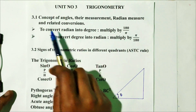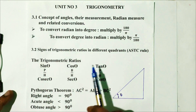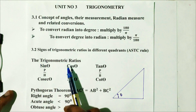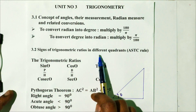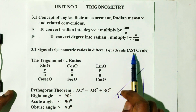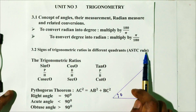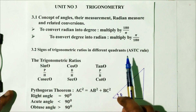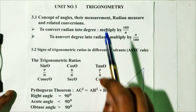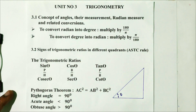This is the first topic. The second topic is: signs of trigonometric ratios in different quadrants and the ASTC rule. Here we have trigonometric ratios — we have 6 ratios.